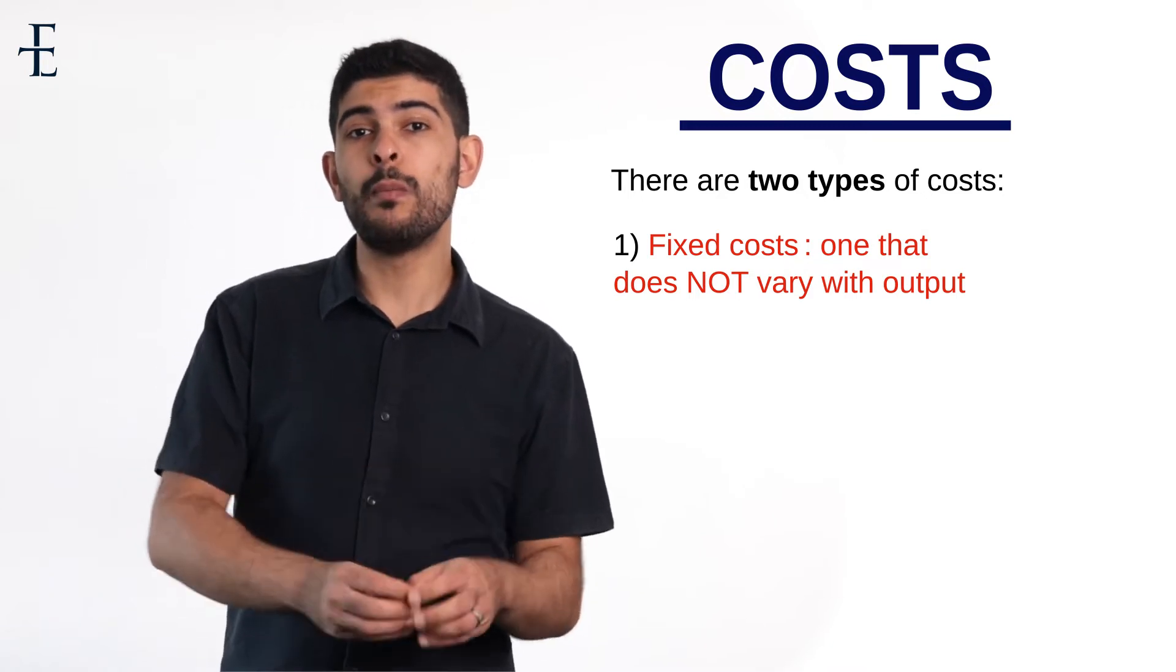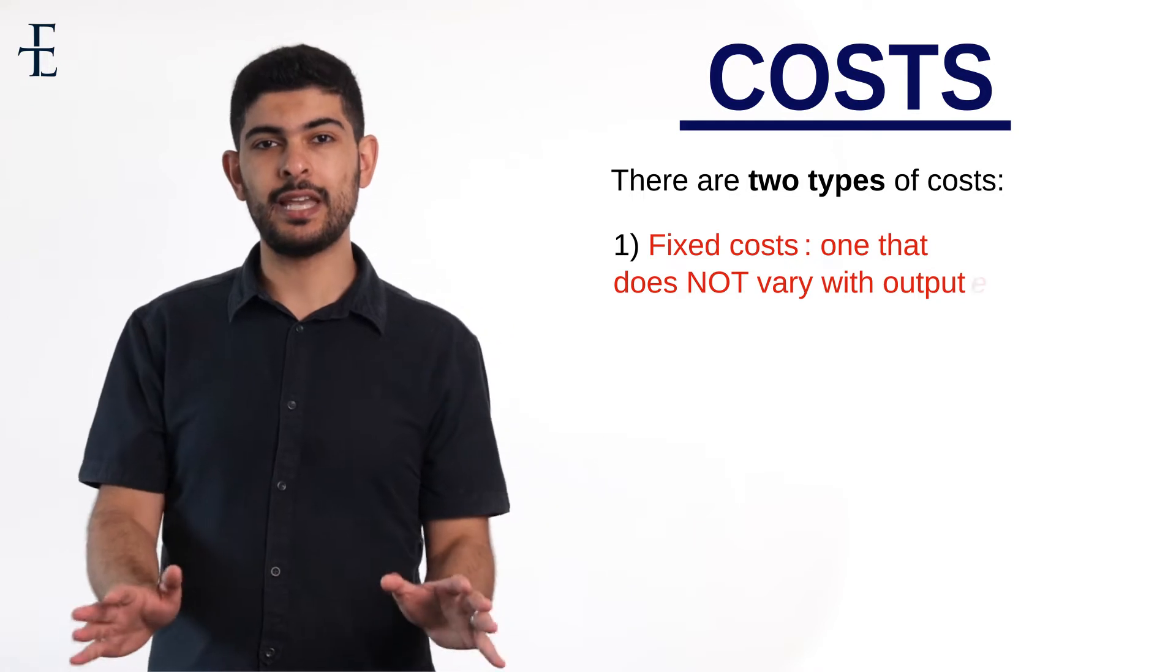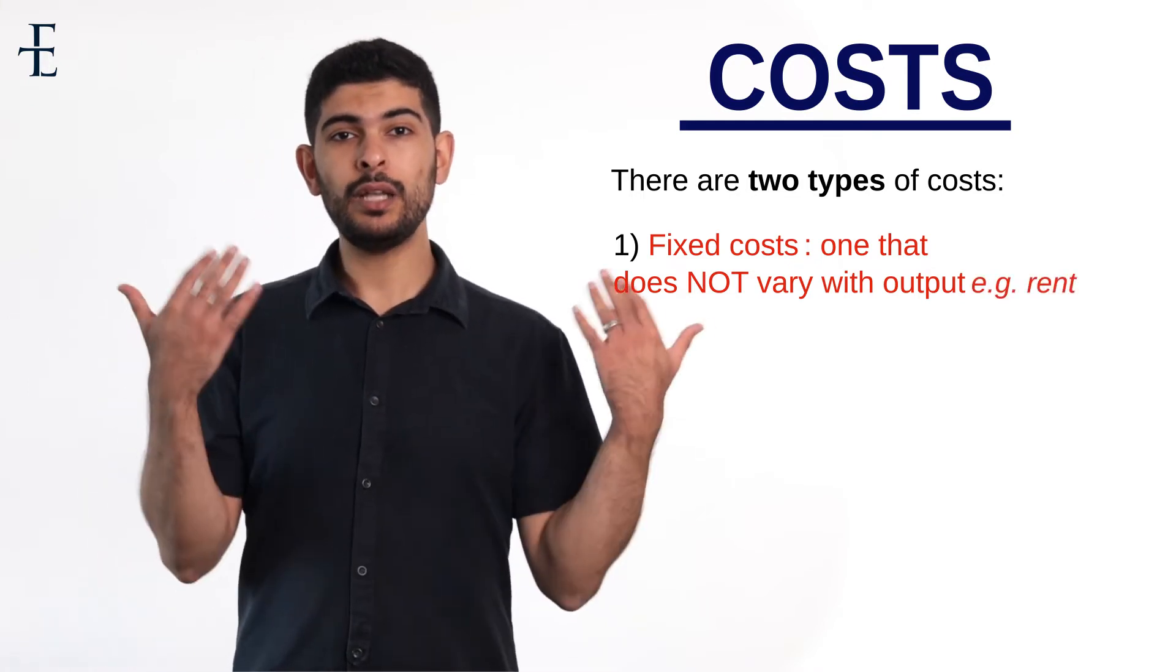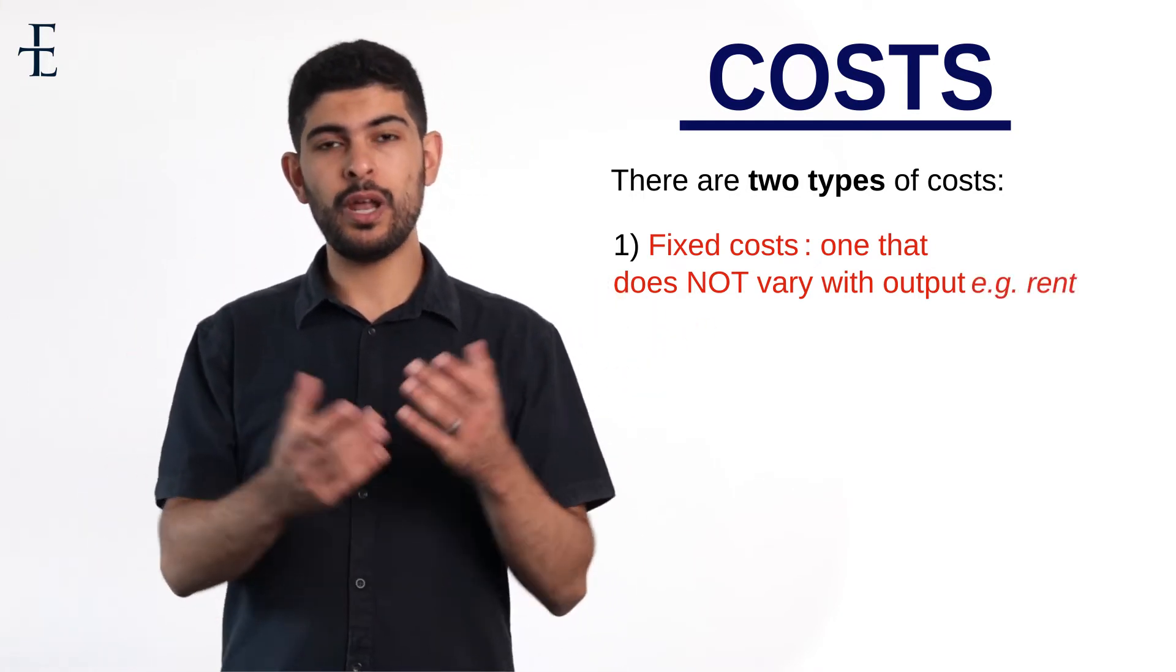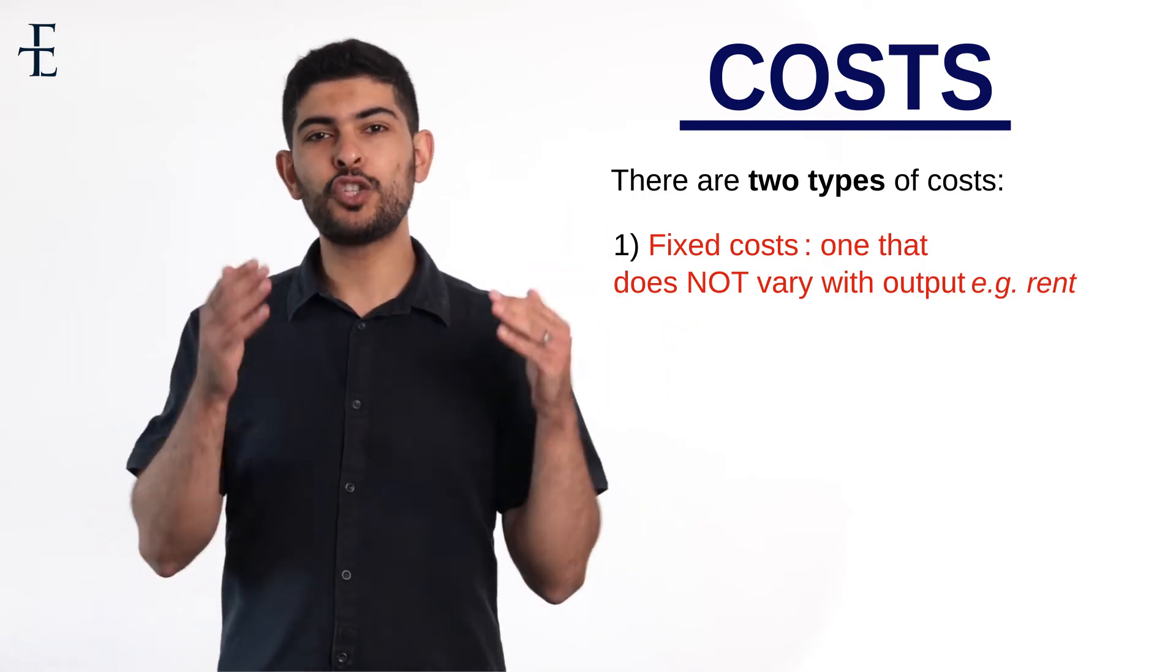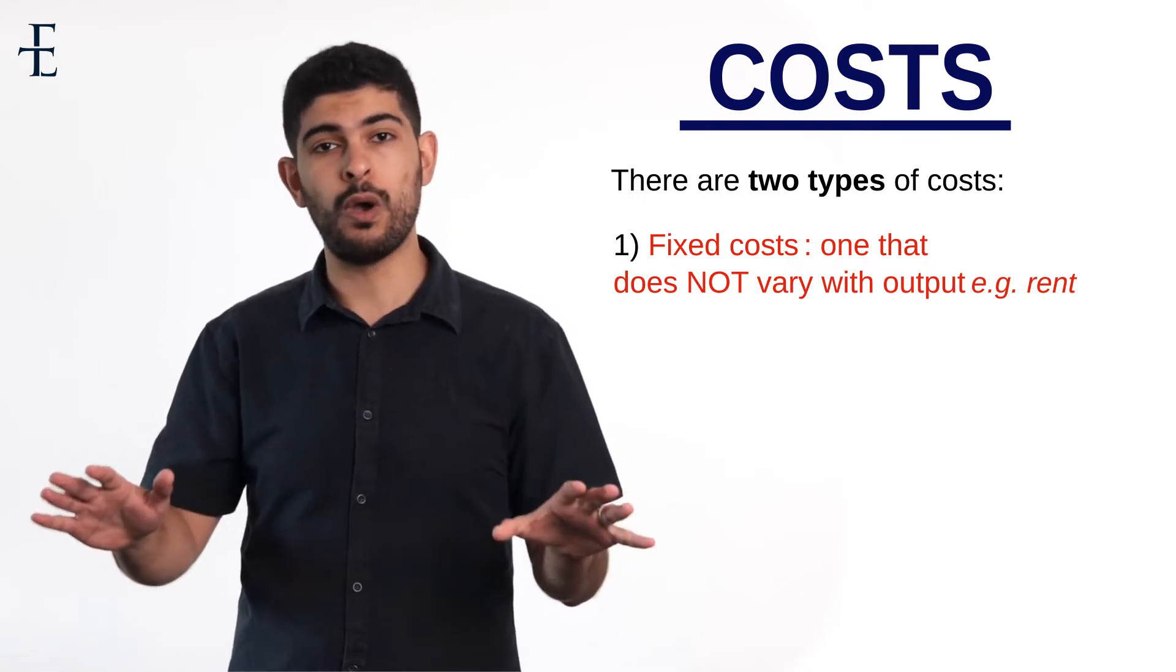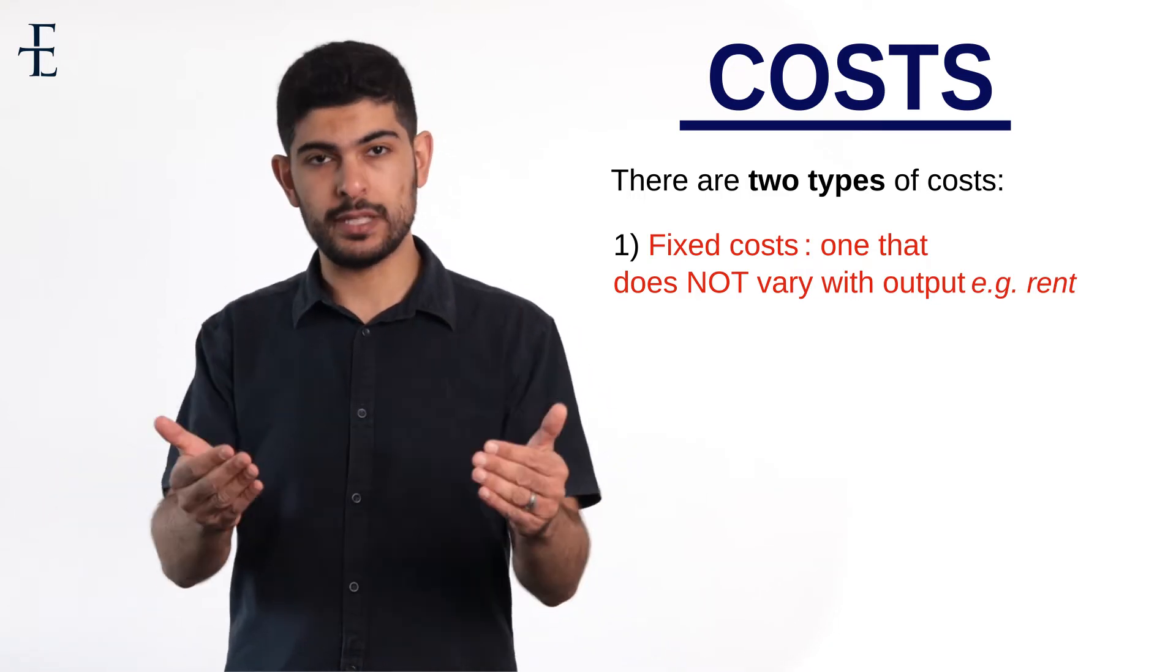By giving an example, it will make more sense. The example they always give in the exam is rent. Imagine that you and I own a chocolate factory, living a great life. Imagine that the chocolate factory is producing nothing, no output whatsoever. Would we still pay rent? Yeah.